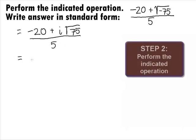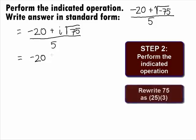In Step 2, we want to perform the indicated operation. We can start simplifying the square root of 75 by rewriting 75 as 25 times 3. This will give us negative 20 plus i square root of 25 times 3 all over 5.